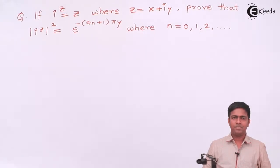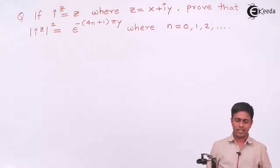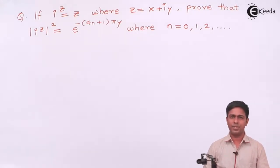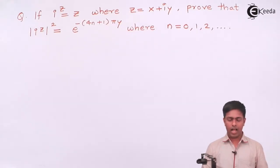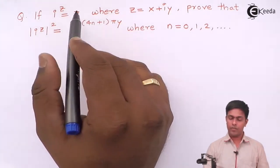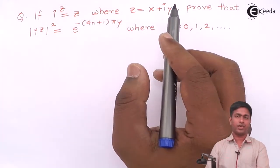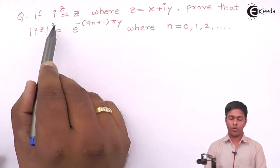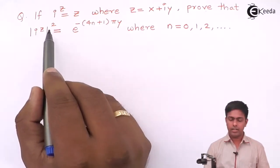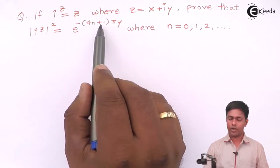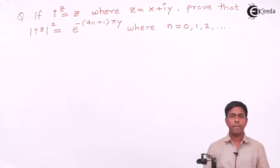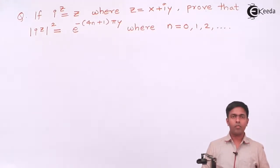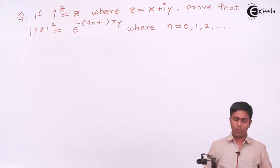Hi friends, here we have to solve a numerical based on complex numbers. i raised to z is given as z, where z equals x plus iy, which is a complex number. We have to prove that the square of the modulus of i raised to z equals e raised to minus 4n plus 1 times pi times y, where n equals 0, 1, or 2.